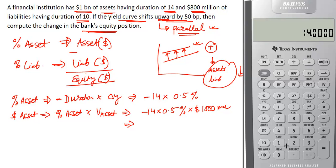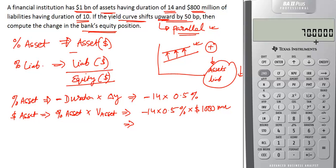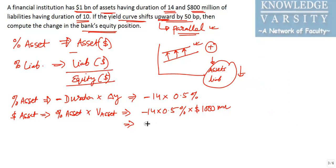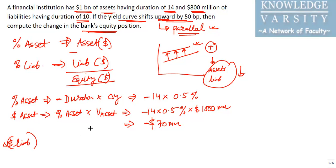Computing this: 14 × 0.5% × 1,000 million = $70 million. So the asset has decreased by $70 million. Similarly, we can directly compute the dollar change in liability.